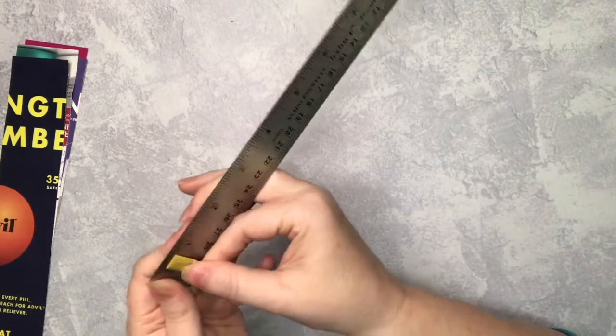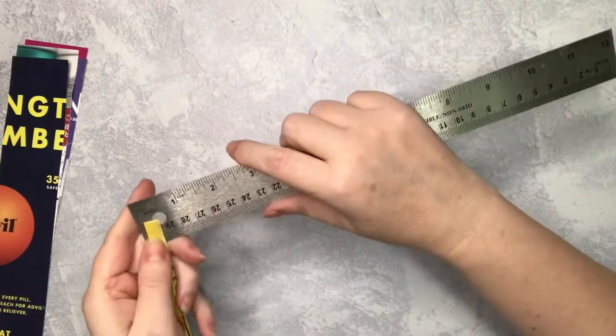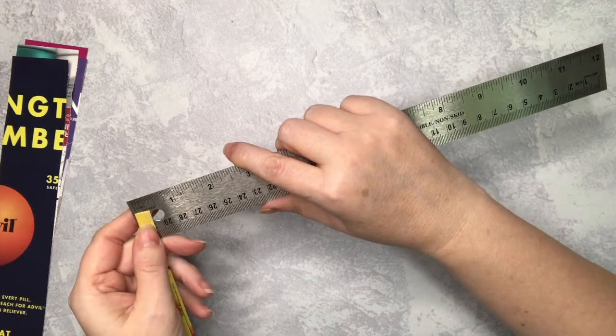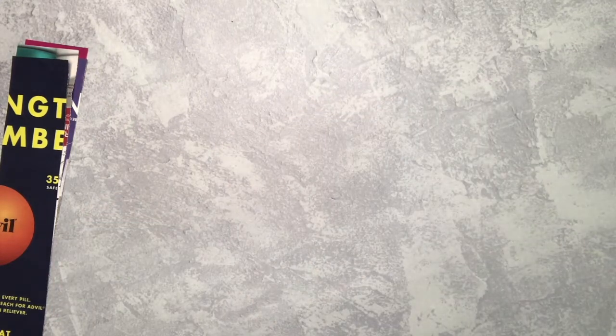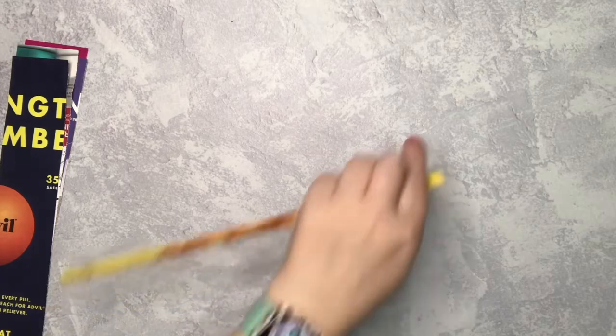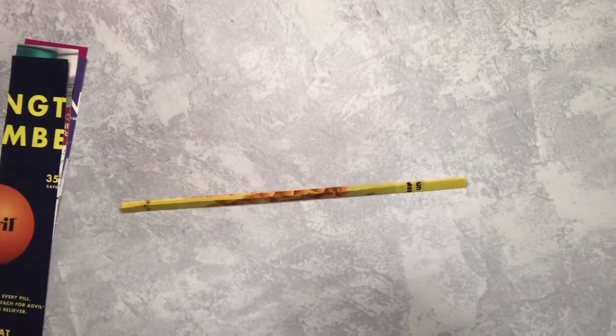I'm laying it on a ruler here just to show you that when I end up, like I said, it's right at about a quarter of an inch thick. You can change this up if you want thicker earrings or thinner earrings. It's just my way of doing it.